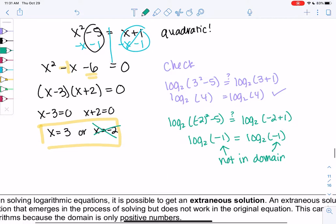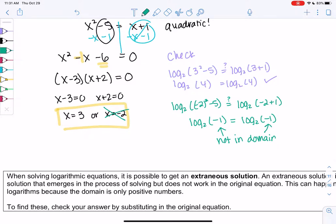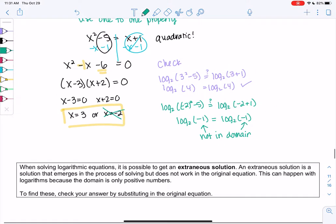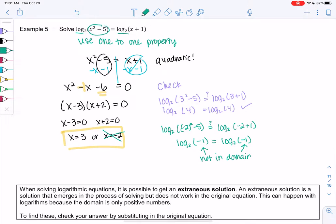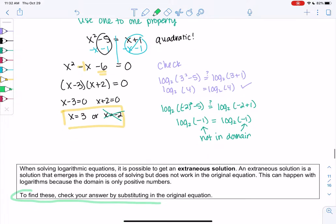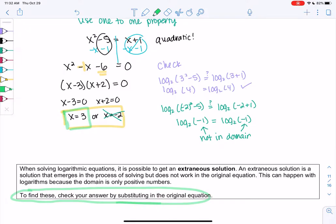And it's called an extraneous solution. When solving logarithmic equations, it's possible to get an extraneous solution. These are solutions that emerge in the process of solving. It is true that x squared minus 5 equals x plus 1, but that's no longer in the domain of logs. So it's in the process of solving, but it doesn't work in the original equation. This happens with logs because the domain is only positive numbers. So it's super important that you go back and check your answers. x equals negative 2 is actually not a solution. So the only solution is x equals 3. And as long as you get in the habit of checking your answers, you will always find them.